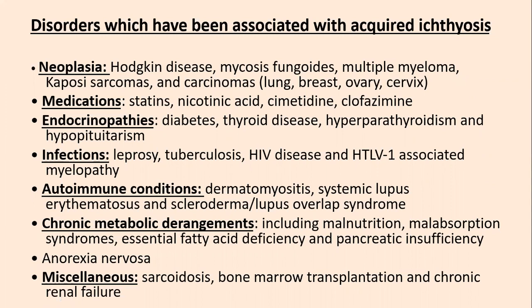Several endocrinopathies — like diabetes, thyroid diseases, and hyperparathyroidism — also result in dry skin. Lepromatous leprosy is a known cause, in addition to disseminated tuberculosis, HIV, and HTLV-1-associated myelopathy. Autoimmune conditions including dermatomyositis, systemic lupus, scleroderma, and lupus overlap syndrome are associated with dry skin. Chronic metabolic derangements including malnutrition, malabsorption syndromes, essential fatty acid deficiency, and pancreatic insufficiency will also result in acquired ichthyosis. Anorexia nervosa, sarcoidosis, bone marrow transplantation, and chronic renal failure are additional causes.